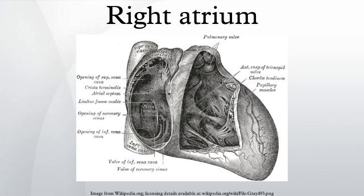The tricuspid valve's superior surface faces the right atrium. The sinoatrial node is located within this chamber next to the vena cava. This is a group of pacemaker cells which spontaneously depolarize to create an action potential. The cardiac action potential then spreads across both atria causing them to contract, forcing the blood they hold into their corresponding ventricles.